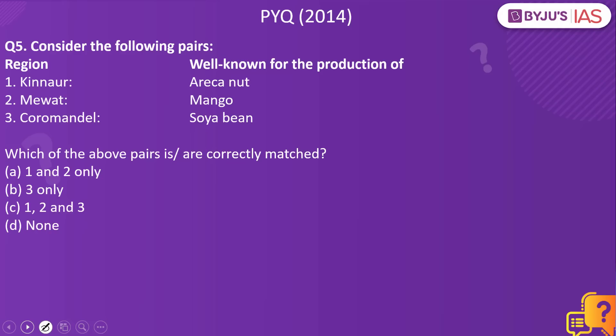Now let's look into the next practice question. Consider the following pairs — a region and what it is well known for producing: Kinnaur and Arcanat; Mewat and Mango; Coromandel and Soyabean. Which of the above pairs is/are correctly matched? The answer is none.